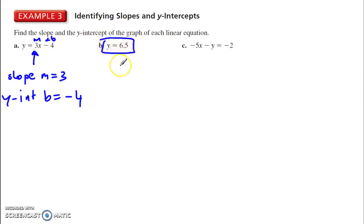This one is written as y equals mx plus b. There's no x here. So we need to write that. y equals no x plus 6.5. No x means 0x. So m is equal to 0, b is equal to 6.5.